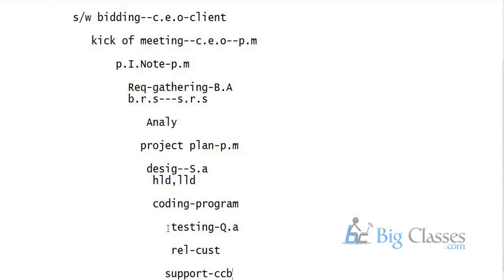The SDLC starts from requirement gathering. First, software bidding — the CEO (Chief Executive Officer) goes to the client site and finalizes the project. Next, kickoff meeting — the CEO comes back to the organization and arranges a meeting with the project manager to select the project manager. Once the project manager is finalized, the project manager prepares the first document called the Project Initiation Note. Then requirement gathering begins.